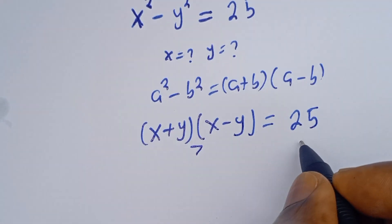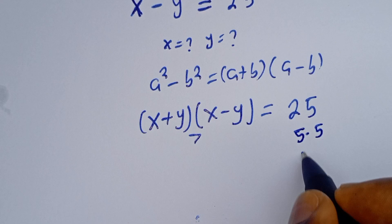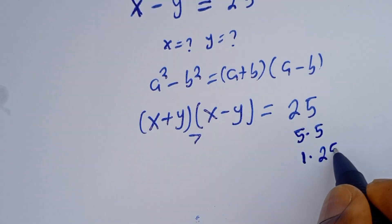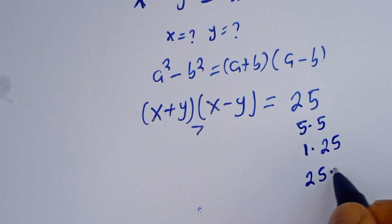25 can be seen as 5 multiplied by 5, then 1 multiplied by 25, and then 25 multiplied by 1.